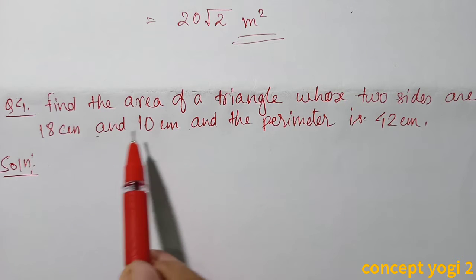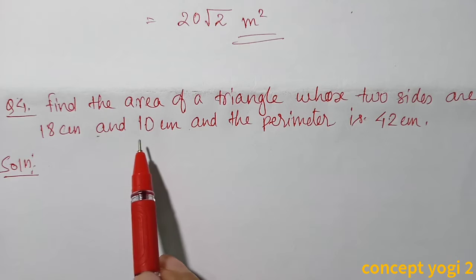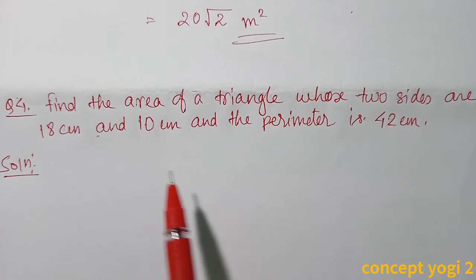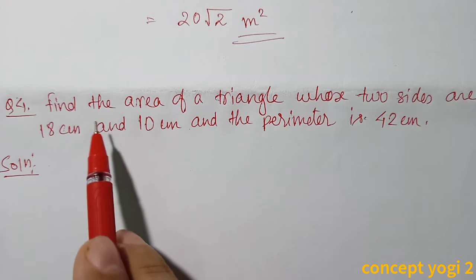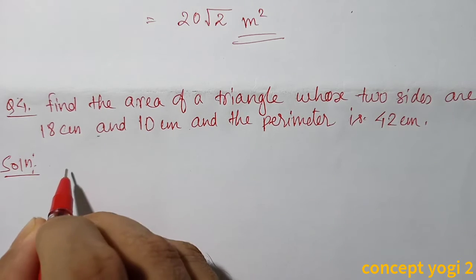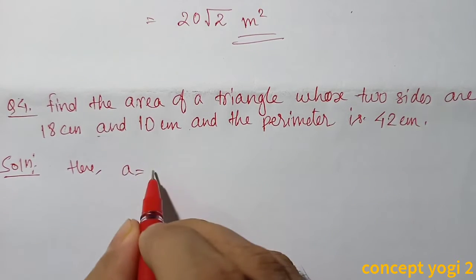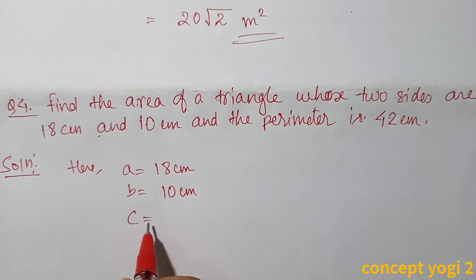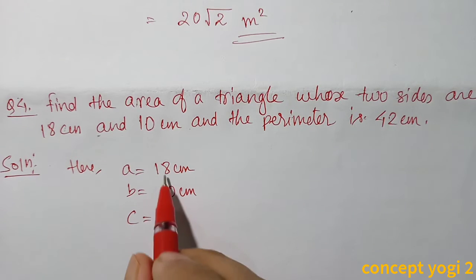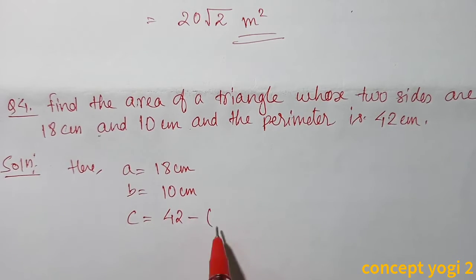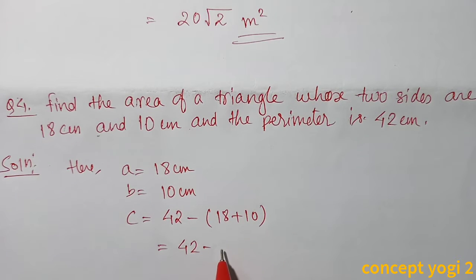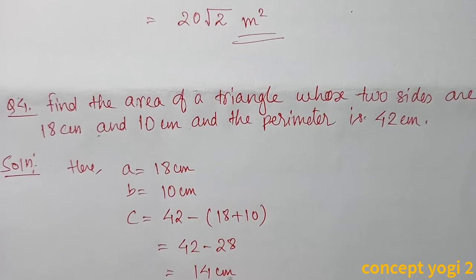Now question number 4. Find the area of a triangle whose two sides are 18 cm and 10 cm and the perimeter is 42 cm. In this question, the measure of two sides is given and we need to find the third side. So a = 18 cm, b = 10 cm. To find c, we subtract the two known sides from the perimeter: 42 − (18 + 10) = 42 − 28 = 14 cm. So the measure of the third side is 14 cm.